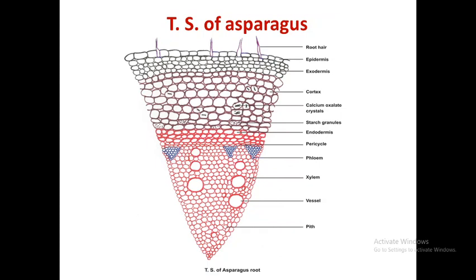The second major layer is the cortex. The upper part of the cortex contains a few layers of thick-walled collenchyma, which is composed of thin-walled cells. The lower part of the cortex contains thin-walled parenchymatous cells. The endodermis contains lignified parenchymatous cells.